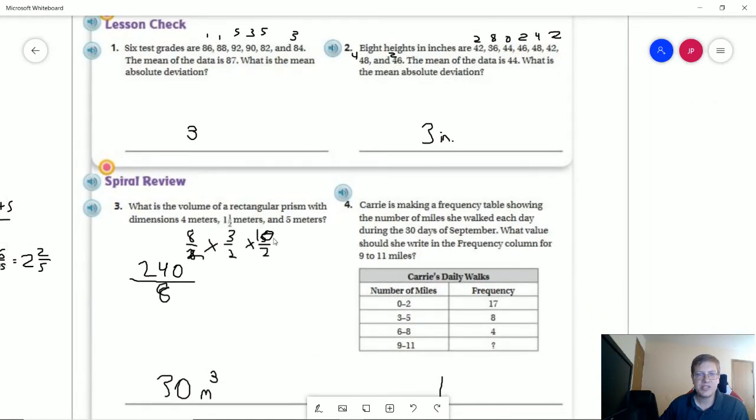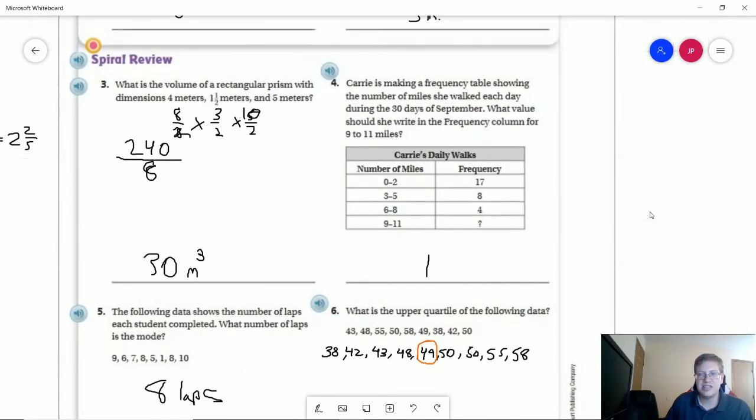I made a mistake when talking through the lesson. I've been really tired lately and made a mental lapse. I talked about doubling all of these to make them parts over two instead of whole numbers, then forgot to do that with the five. I caught that when working through it, so apologies. We get 240 on top, eight on the bottom. 240 divided by eight gives us 30 meters cubed for our volume of our rectangular prism.